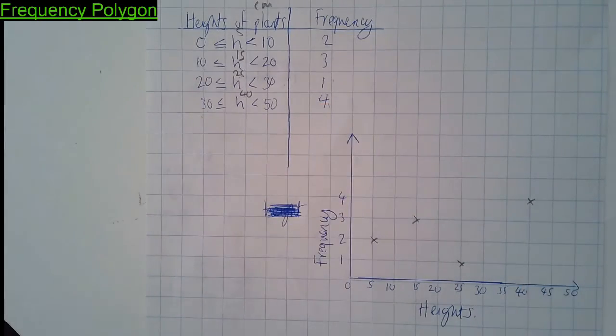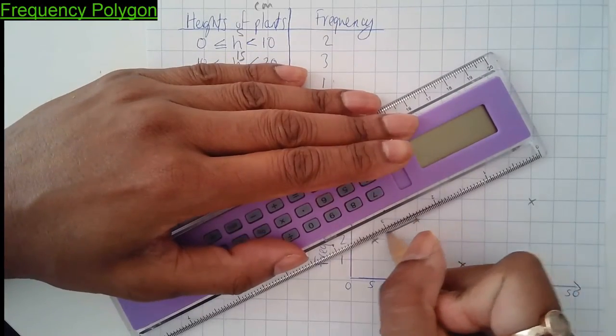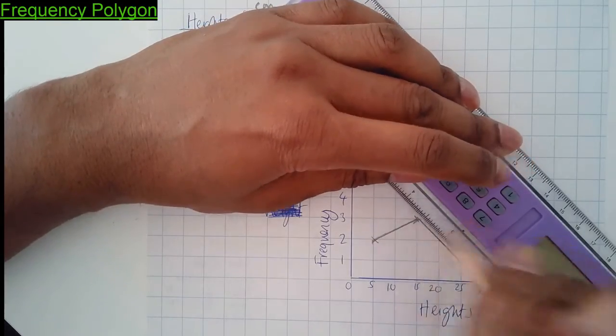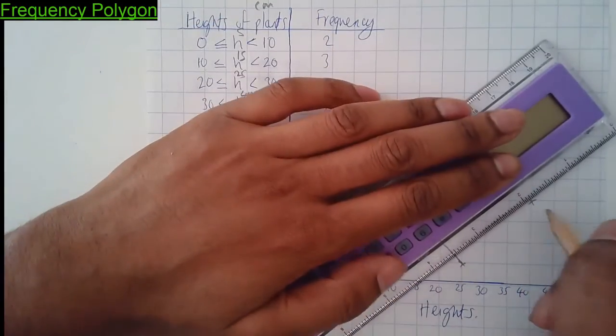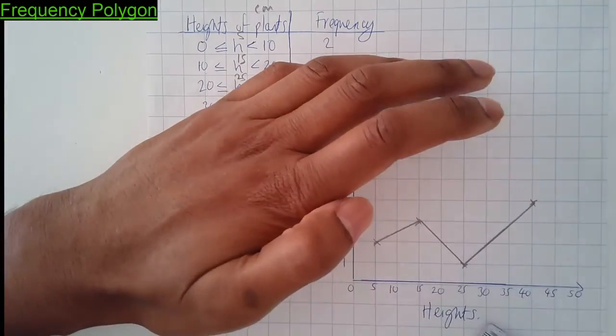Then what you do, get a ruler, join them up. And you're not doing a line of best fit, anything like that. You're actually doing a frequency polygon.